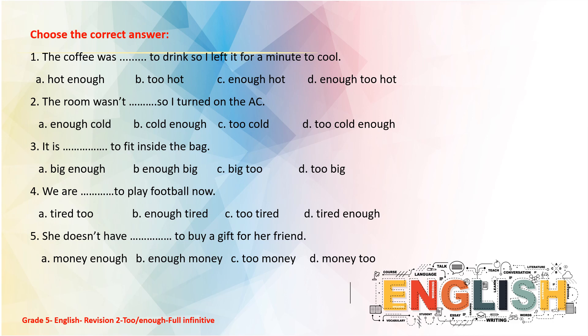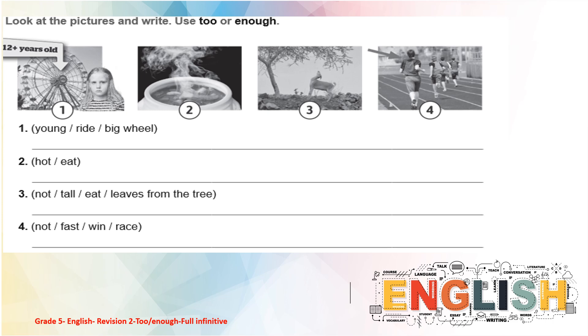Now it's time to practice 'too' and 'enough'. You have five questions. You can stop the video and do it. Let's check your answers: one — 'The coffee was too hot to drink.' Two — 'The room wasn't cold enough, so I turned on the AC.' Three — 'It is too big to fit inside the bag.' Four — 'We are too tired to play football.' Five — 'She doesn't have enough money to buy a gift for her friend.'